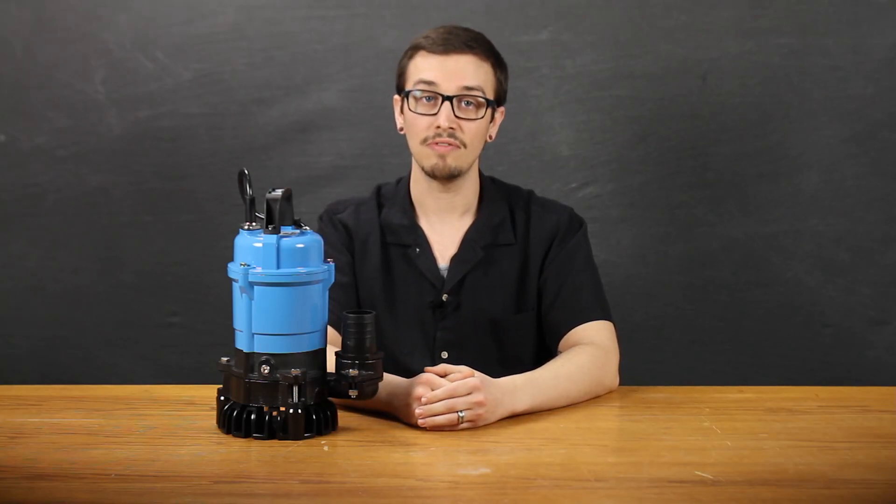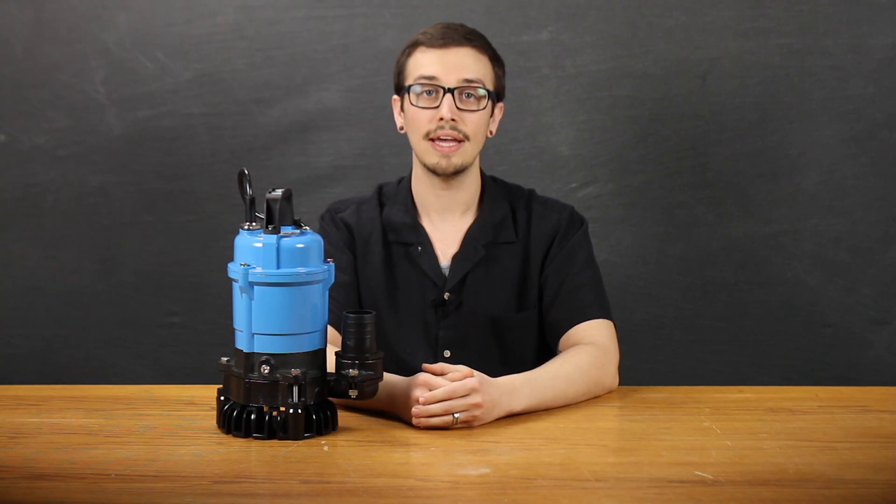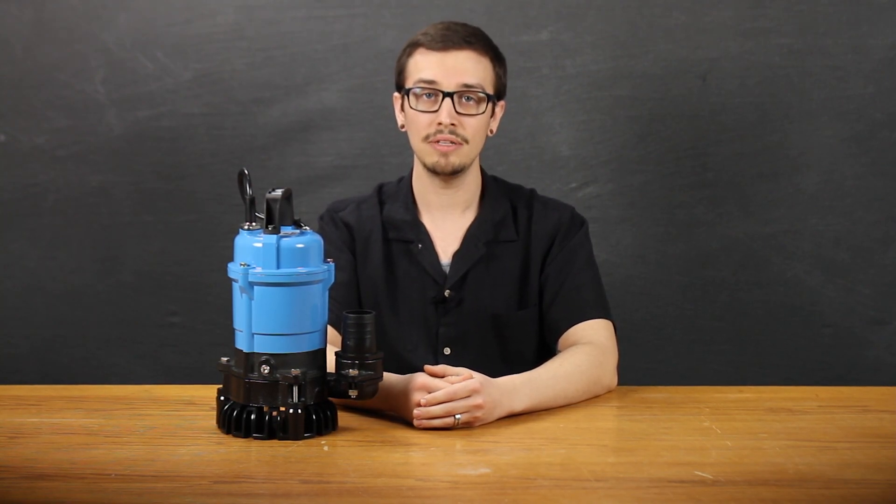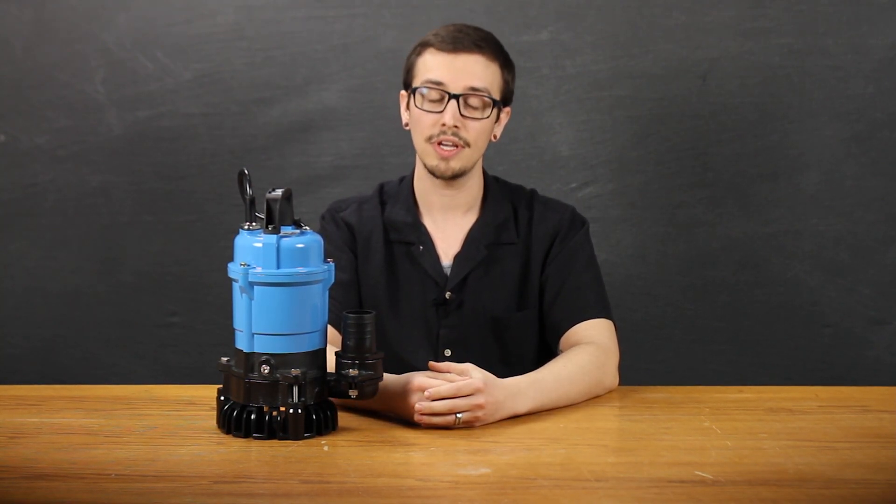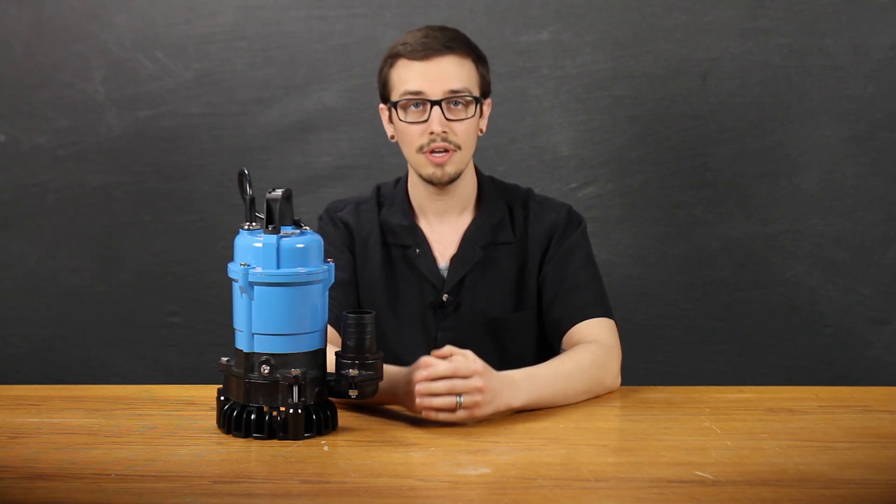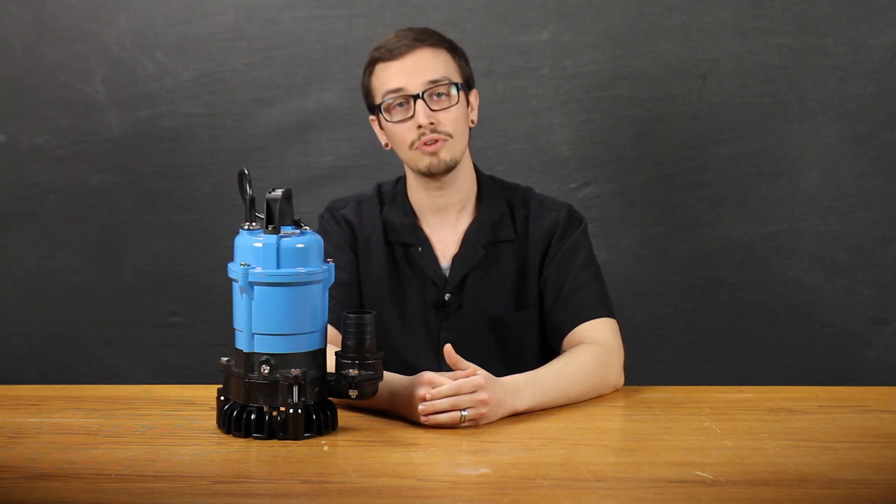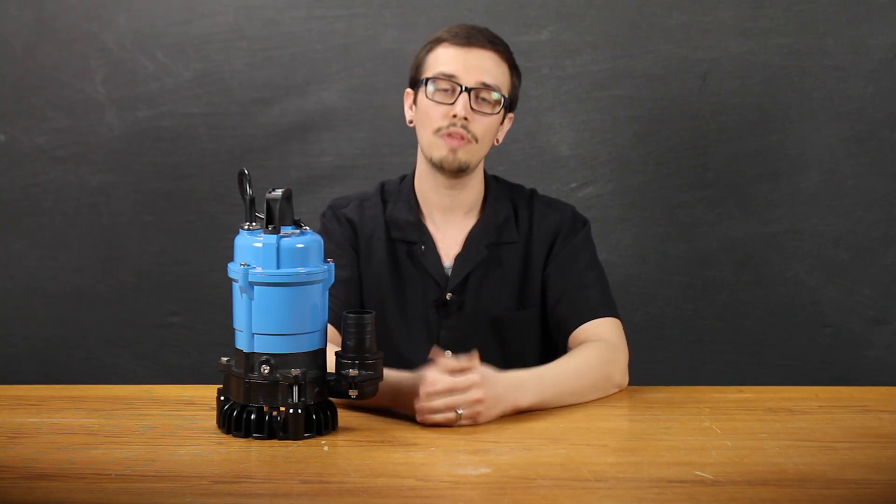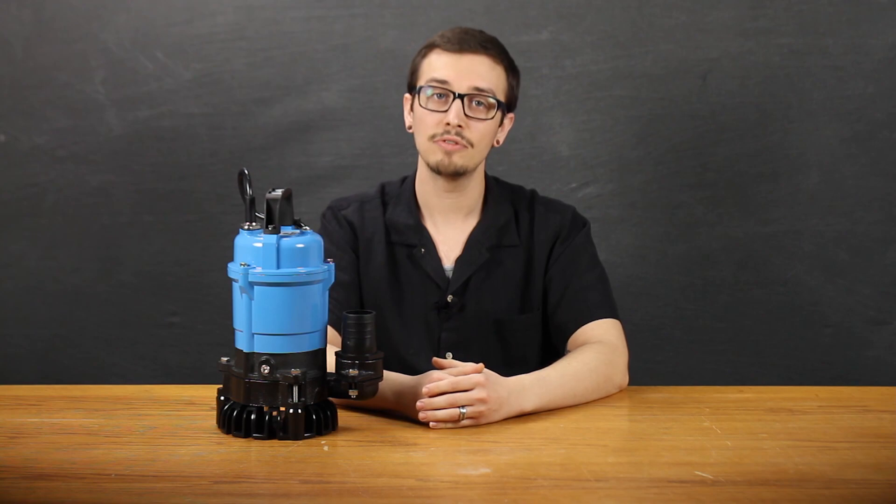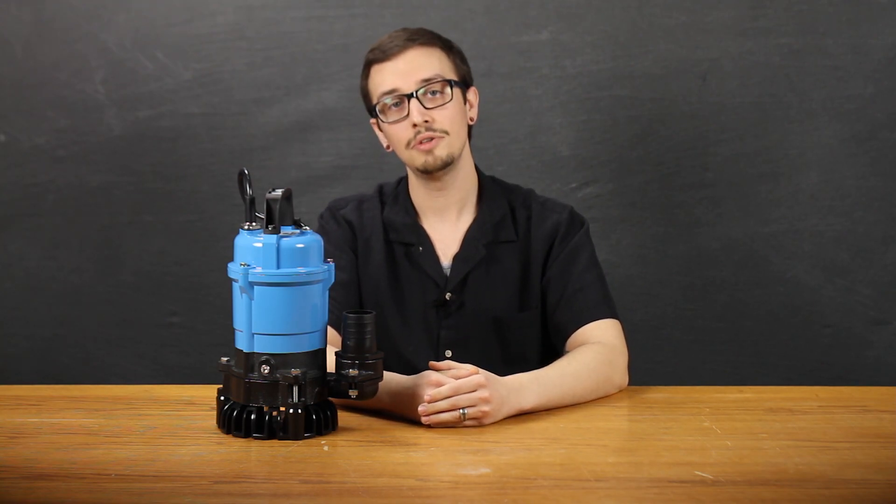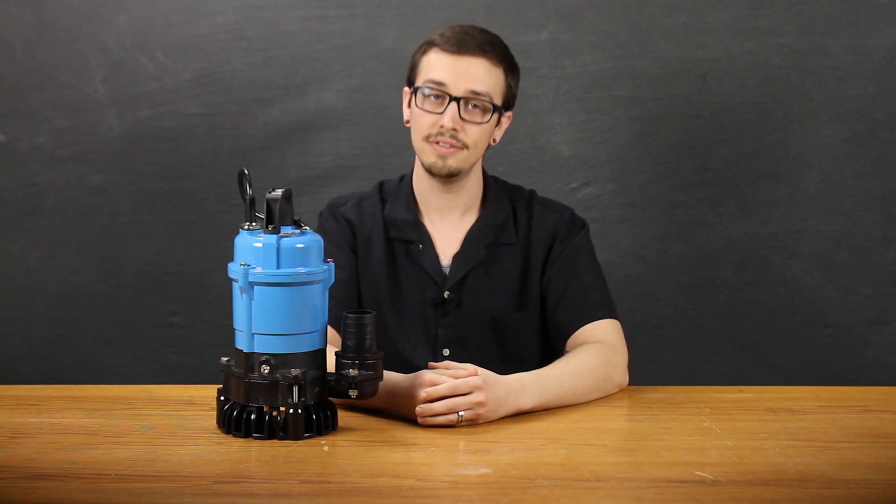This pump comes standard with a 15-foot SJTW type cord, and the SJTW means that this cord is rated for service in especially hard conditions, such as outdoors, and it also includes a tough thermoplastic coating on the cord, which is going to be also weather-resistant. Bar Mesa offers cord lengths up to 50 foot on this pump, however, 15 foot is the standard.